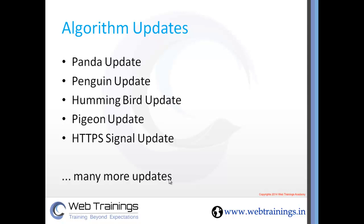Google also released the Hummingbird update, which automatically understands user queries and translates them to give appropriate answers. For example, if you type 'where is Taj Mahal,' you now get a one-box answer telling you Taj Mahal is in Agra, rather than just websites. Google also released a Pigeon update in July and August related to local listings and ranking local businesses. Most recently, Google released an HTTPS signal update, giving preference to HTTPS websites over HTTP sites.